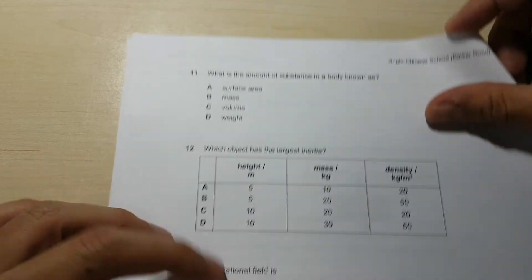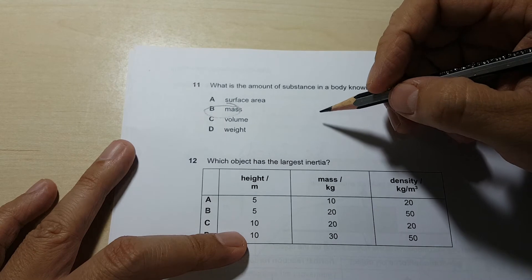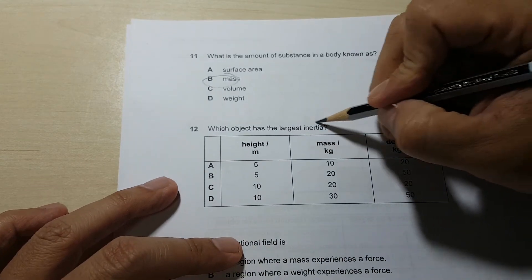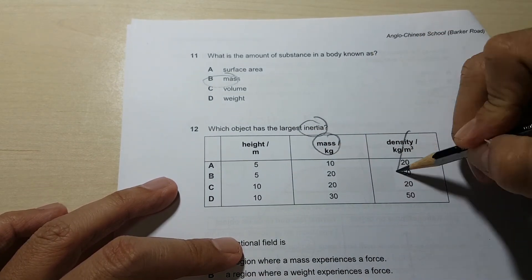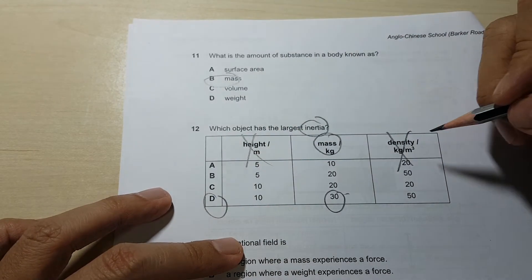Question 11, amount of substance in the body is based on definition for B. That's mass. Inertia is only related to mass, so I don't even care about the rest. So just look at highest mass. Answer D.